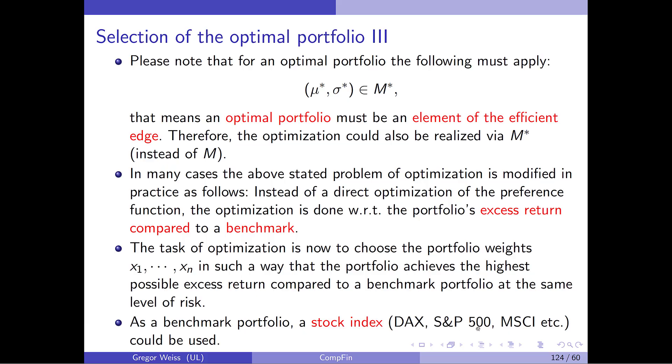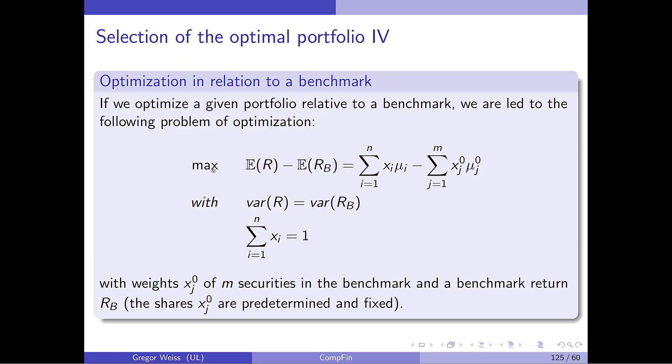So you choose a benchmark like the DAX 30 S&P 500. And what you do then is you don't maximize a preference function, but you say, maximize the excess return of your portfolio with respect to the benchmark. And then, of course, this is simply given by the portfolio expected return minus the expected return of the benchmark. Might be that actually those weights, that certain stocks are the same here, that you also have some stocks that are also included in the benchmark. But you want to have a variance that is equal to the benchmark and all those weights should add up to one. Now, the weights of the securities in the benchmark, they are obviously given by the construction of the index. They are predetermined and fixed. But you want to choose those X1, X2, XNs here to optimize your excess return. So this is optimization in relation to a benchmark.